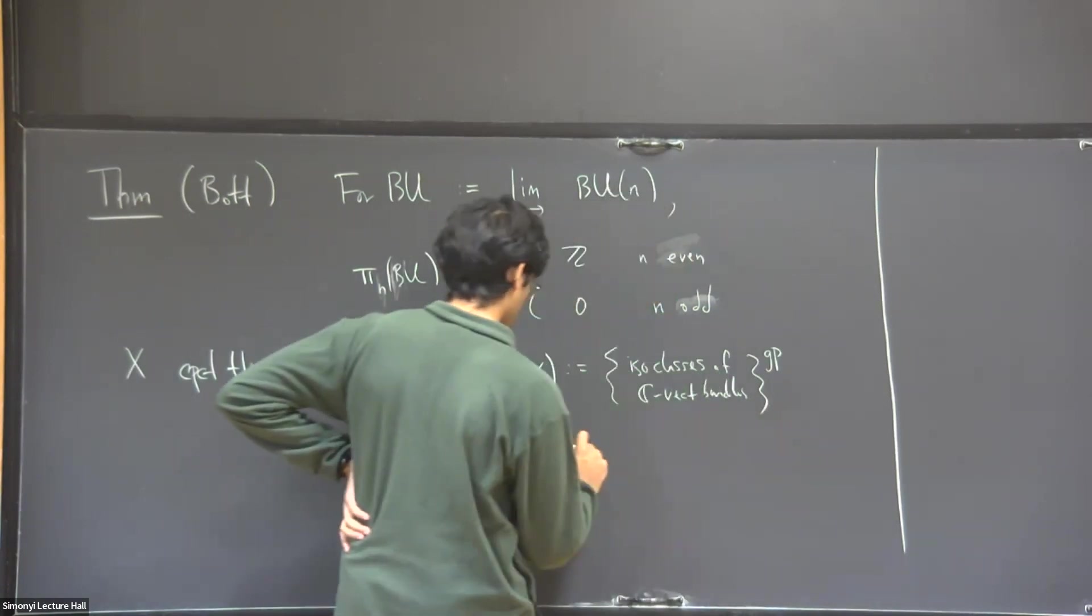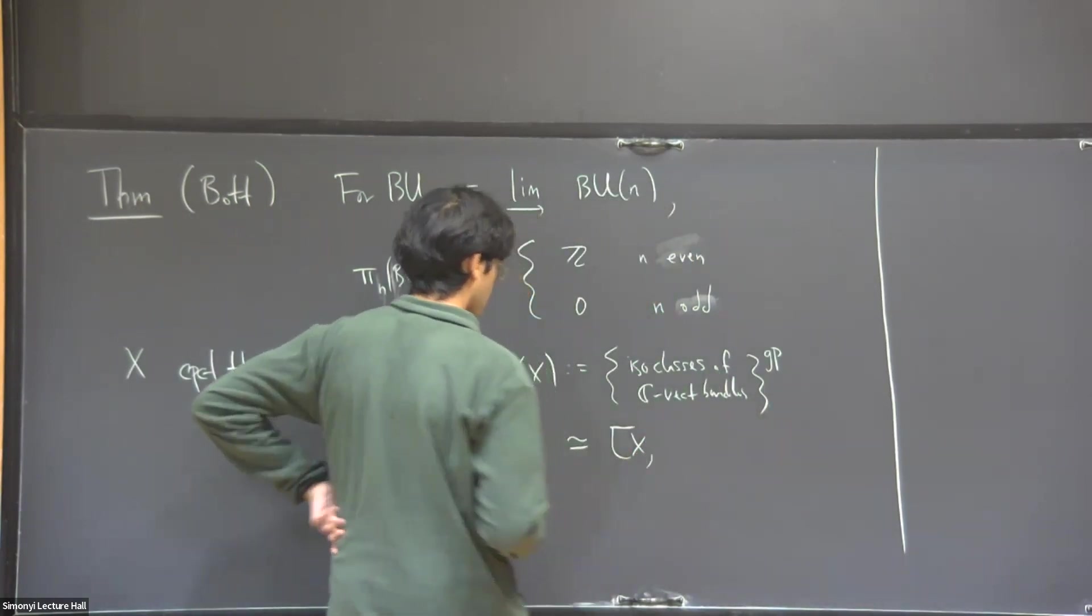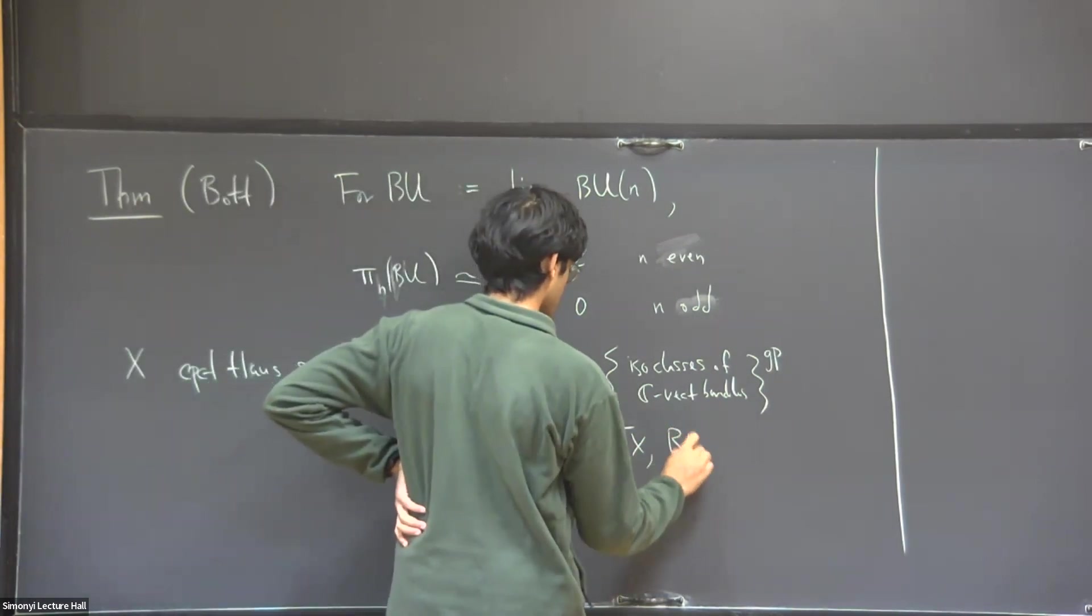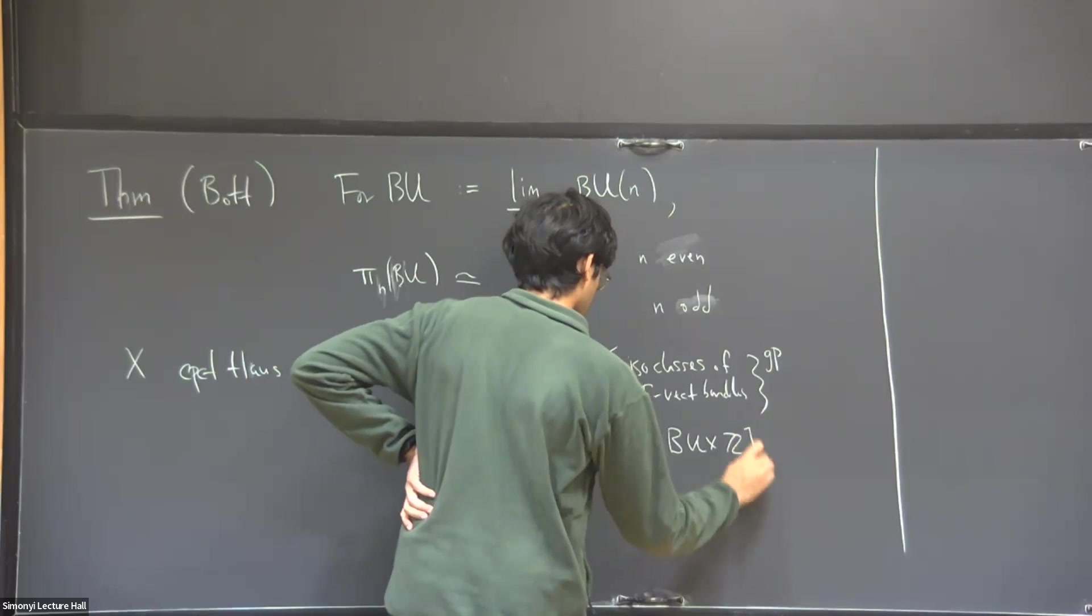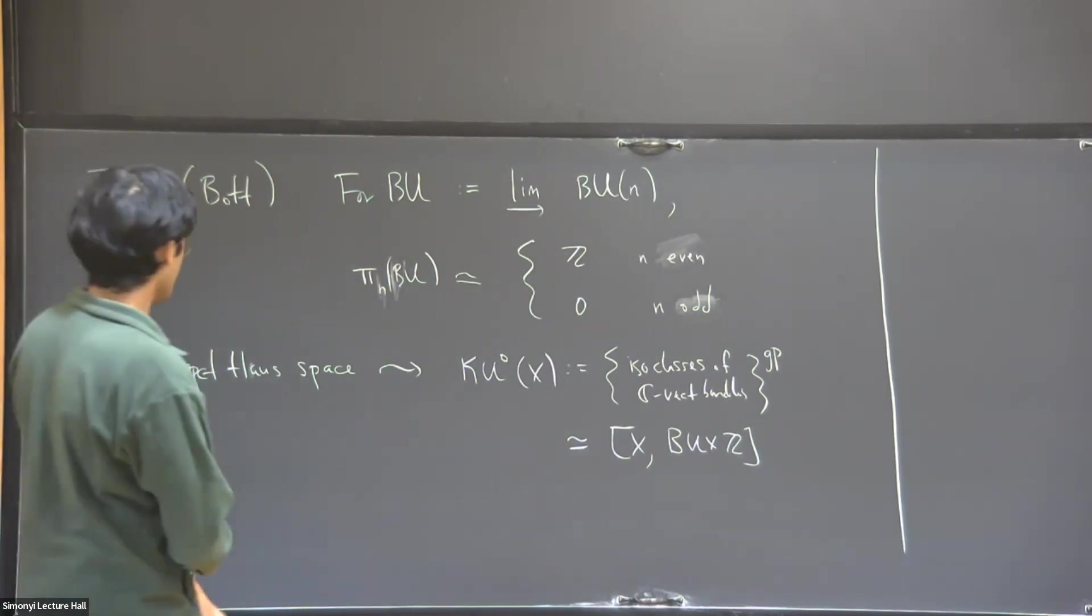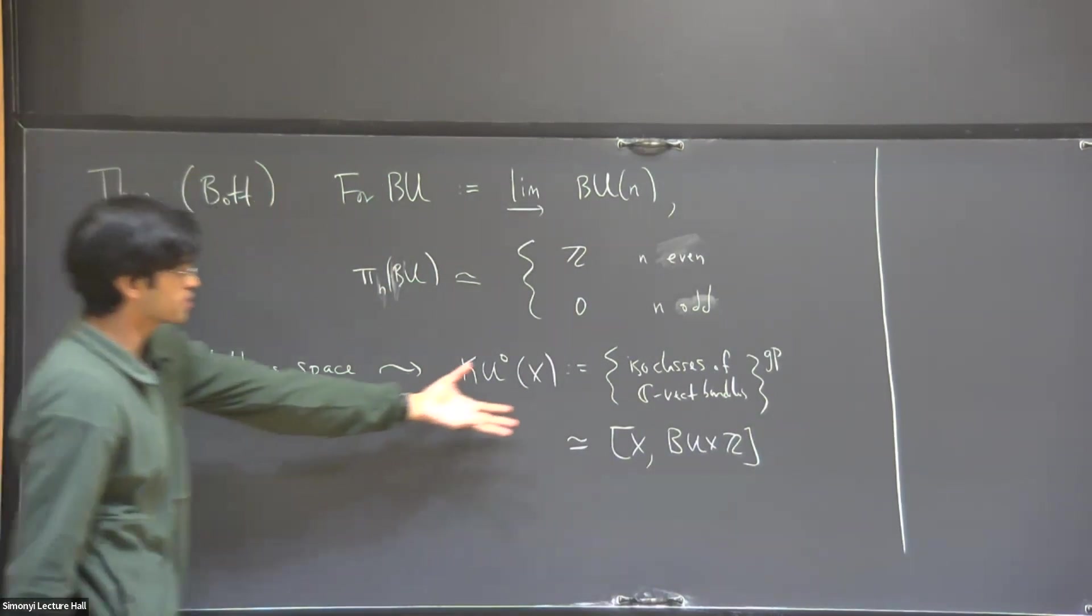And it can also be written as the set of homotopy classes of maps from this space into something closer to BU times Z. This space is basically a representing space for complex K-theory. And this theorem about the space, it buys you something about this group.